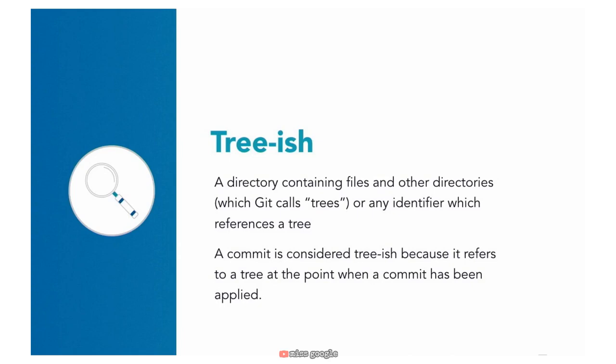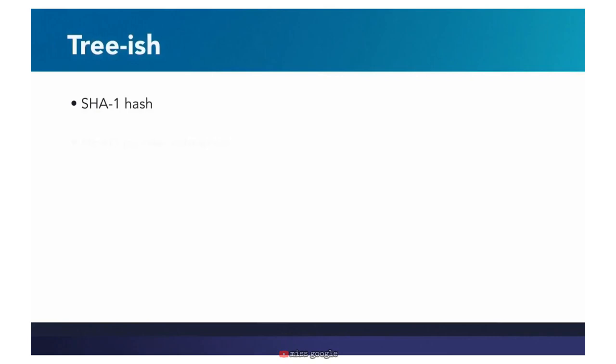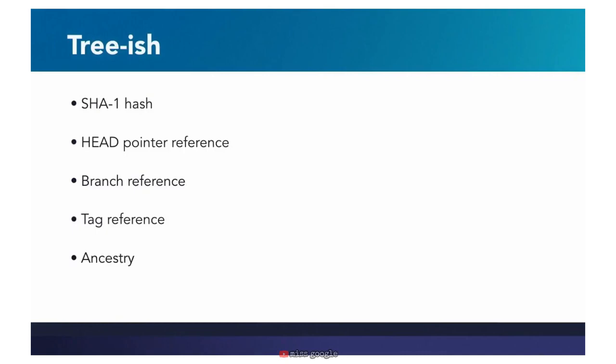Treeish is an important term to know because it shows up in the Git documentation. If you look up a Git command, it might say you can use any treeish as a target of that command. In simple terms, a treeish is a directory, a commit, or a reference. Examples include an SHA1 hash, a head pointer reference, a branch reference, a tag reference, or the ancestry of one of those. There are more advanced examples too, but these are the most common.